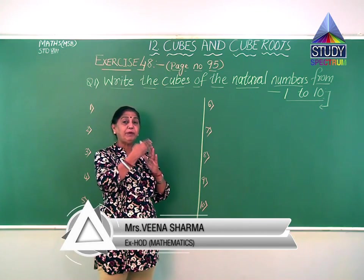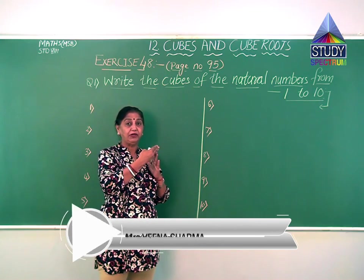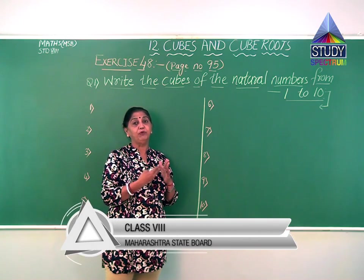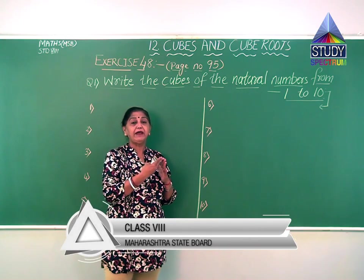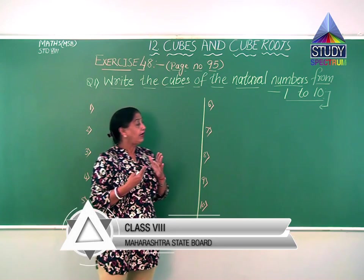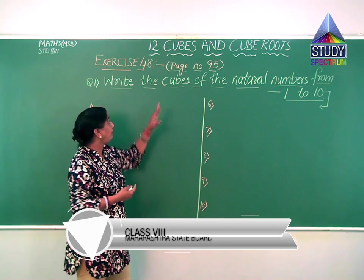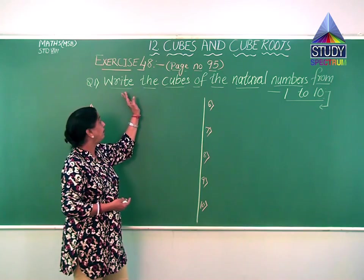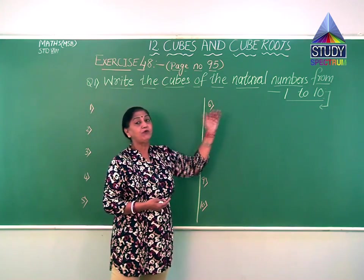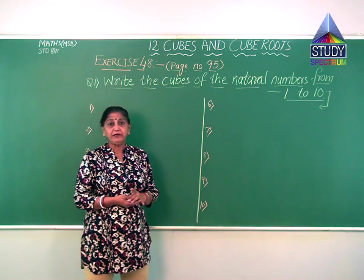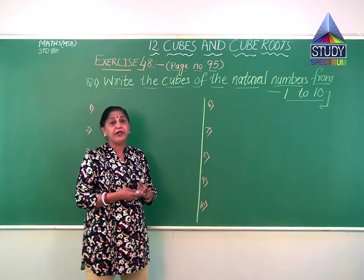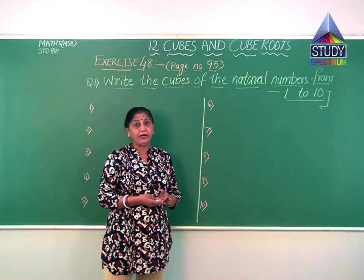Whenever the power or index is 3, that is known as cube. We read it as 2 cube, 5 cube, 6 cube, like that. Now let us see the first question of this exercise: write the cubes of the natural numbers from 1 to 10. It is very easy — we have to just find the cube of natural numbers starting from 1.